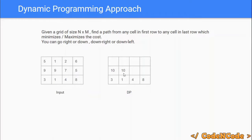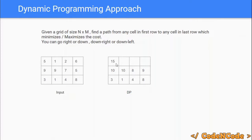For the next cell, three options exist: down-left, down, and down-right. The minimum among them is 1, so 1 plus the cell cost of 7 equals 8. For the last cell in this row, down and down-left are available; minimum is 4, so 4 + 5 = 9. Moving to the next row up, for the first cell the options give a minimum of 10, so 10 + 5 = 15.